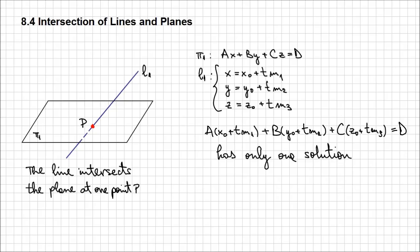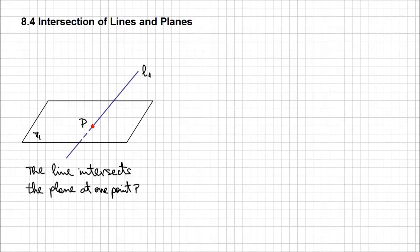So t equals any real number. That is exactly what you need to determine the coordinates of this point P. That's one way to approach this situation in which a line intersects a plane in one point.